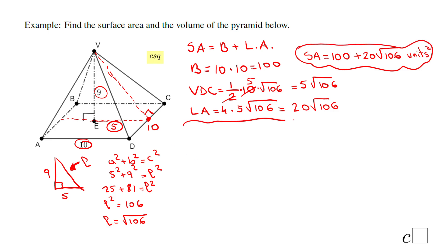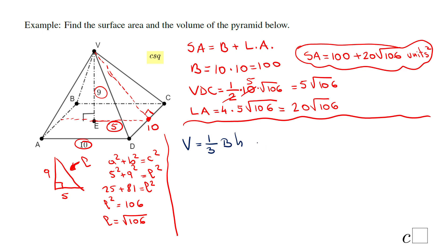Let's go to the volume of the pyramid. Volume equals one-third times area of the base times the height — don't forget that one-third. The area of the base is 100, and the height is 9. So we have one-third times 100 times 9: simplifying, 9 divided by 3 is 3, and 3 times 100 equals 300 cubic units.